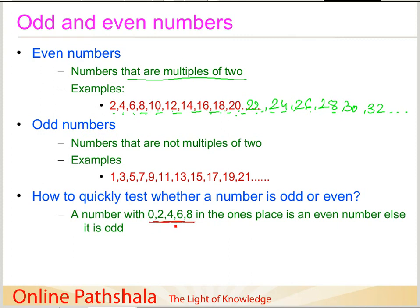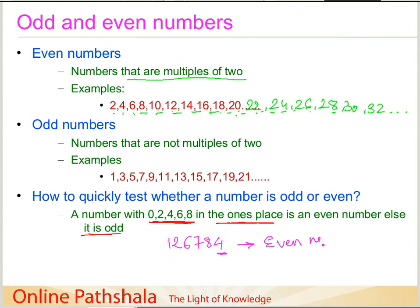A number which has 0, 2, 4, 6, or 8 in the ones place is an even number; otherwise it is odd. For example, take a large number like 126,784. Is it odd or even? We simply look at the ones place — the digit is 4, and since 4 is a multiple of 2, this is an even number, meaning it is divisible by 2.